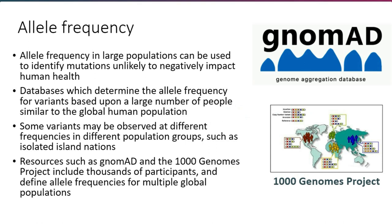Next, allele frequency. Allele frequency is computed typically from large populations and can be used primarily to identify benign or neutral mutations. The reasoning is that most mutations that are very common have not been evolutionarily selected against across vertebrate and human evolution. So if you can identify a variant found in a large number of individuals, there's a good chance that variant is benign. This differs from population to population, so databases such as gnomAD and 1000 Genomes include thousands of participants with allele frequencies defined for particular global populations.